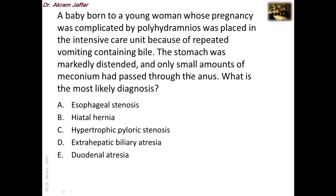The stomach was markedly distended and only a small amount of meconium had passed from the anus. Esophageal stenosis would not present this way. Hiatal hernia may cause reflux or vomiting but not bilious vomiting. Hypertrophic pyloric stenosis presents with distension and a knot, but no bile, as the obstruction is proximal to where the bile duct opens into the duodenum. Extrahepatic biliary atresia presents with jaundice with no bile reaching the duodenum. These signs and symptoms are consistent with duodenal atresia.